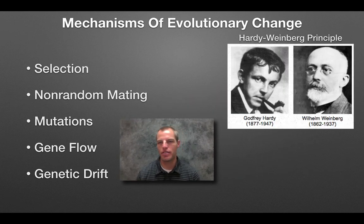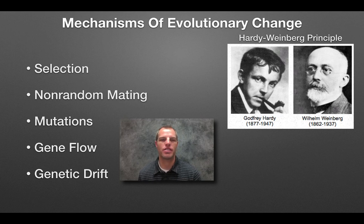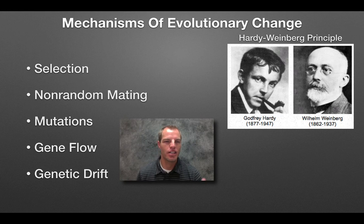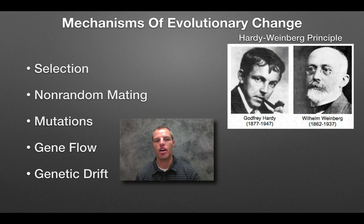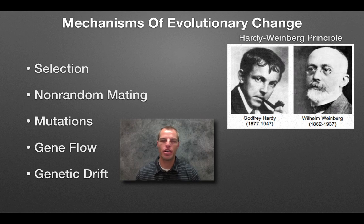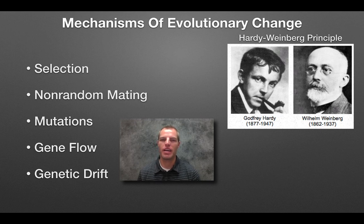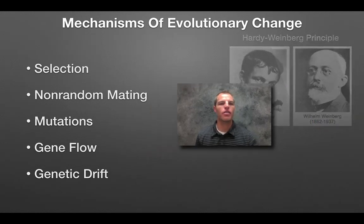Before we do that I want to bring up these two guys — this is Hardy and Weinberg. What they did was they came up with a principle that said if these things — you can see on the left: selection, non-random mating, mutations, gene flow, genetic drift — if these things are happening, evolution is going to take place. But if these things are not happening, then that population is going to be at what we call stasis, basically not evolving. They created a mathematical equation for gauging evolution.